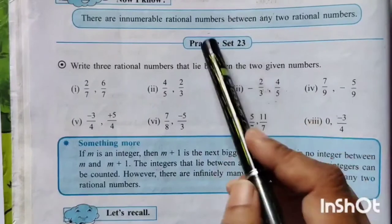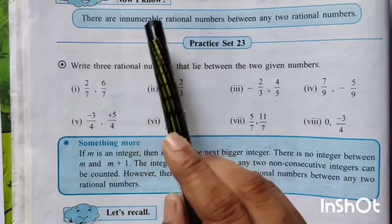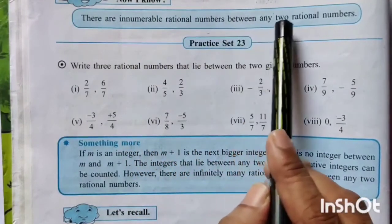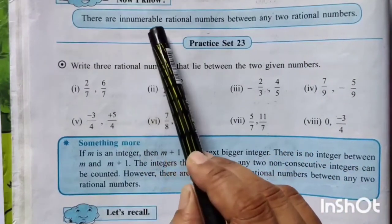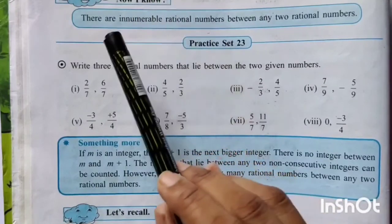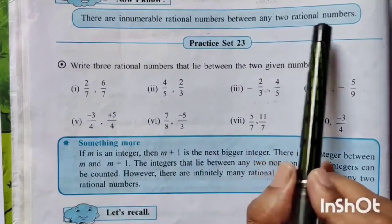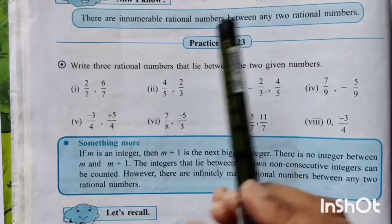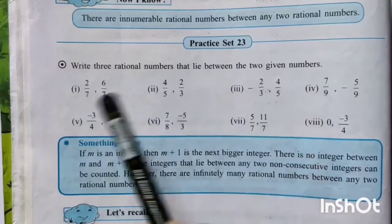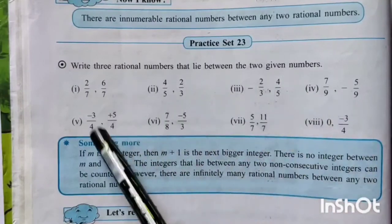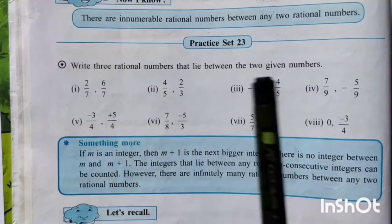See children, above this Practice Set 23, there is one sentence: there are innumerable rational numbers between any two rational numbers. So between any two rational numbers, we can find and write innumerable rational numbers — we cannot even count them. But in Practice Set 23, we have to write three rational numbers that lie between the two given numbers.